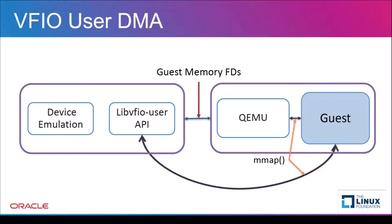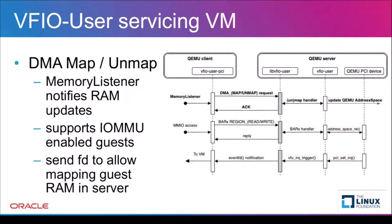Now let's turn our focus to the steady state operations of the server. One of the essential functions of a PCI device is to perform DMA — that is, to transfer data between the RAM and the PCI device. The client maps the VM's RAM into the server's address space to facilitate DMA when the device runs in a separate process. The client registers a memory listener with QEMU which notifies the server whenever it detects changes to the VM's RAM. This notification describes the change and includes a file descriptor. libvfio-user uses the file descriptor sent by the client to map the device's RAM regions to the server, and the library notifies the DMA handlers in the QEMU server, which modifies the device's address space to reflect this change.